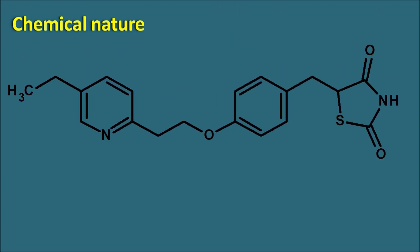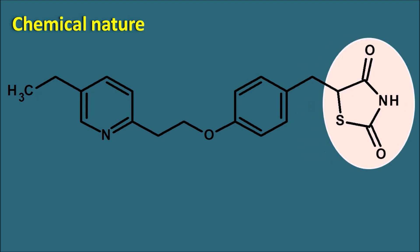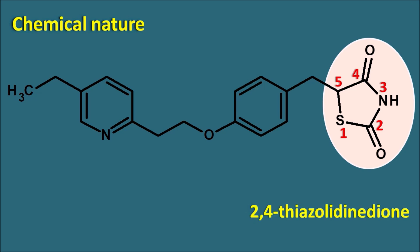Regarding the chemical nature, pioglitazone is a thiazolidinedione derivative. Looking at its structure, we can observe a heterocyclic ring system containing sulfur and nitrogen. Numbering starts from the sulfur: positions 1, 2, 3, 4, 5 — this is thiazolidine with ketone groups at the 2nd and 4th positions, giving the suffix '2,4-thiazolidinedione.' This 2,4-thiazolidinedione is attached via a methyl group at the 5th position, written as '5-methyl.'